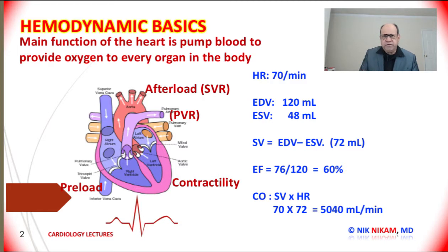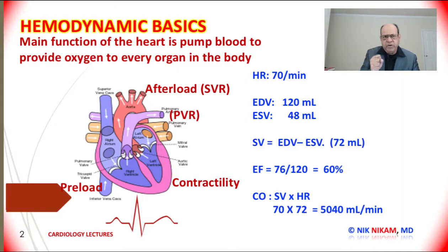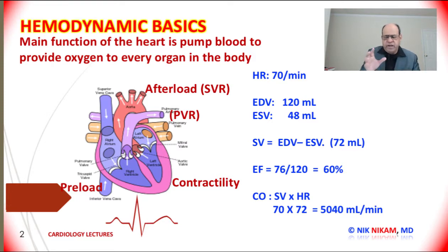The normal ejection fraction is between 55 to 70%. In patients with hypertension who have a hyperdynamic heart, or some young people with a hyperdynamic heart, their ejection fractions can be close to 80%. But in patients with congestive heart failure, with a history of myocardial infarction and a dilated heart, they can have ejection fractions below 40 — we consider that low ejection fraction, or congestive heart failure.